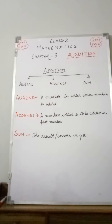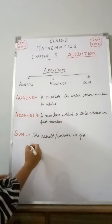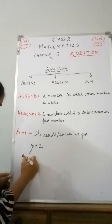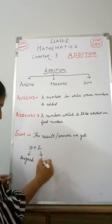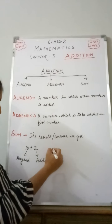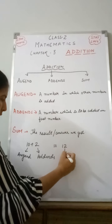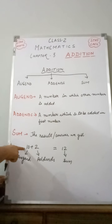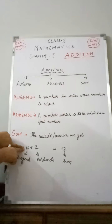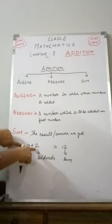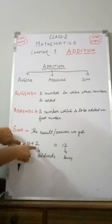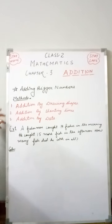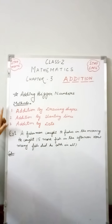Let's take one example to clarify these three terms. Suppose the question is 10 plus 2. Here, 10 is the Augend — the number to which another number is added. This 2 is the Addend — the number which is added to the first number, 10. And the Sum is 12. I hope all these terms are clear with this example.